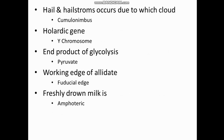Hollandric genes are located on the Y chromosome. They are responsible for maleness. The end product of glycolysis is pyruvate - that's an easy one.